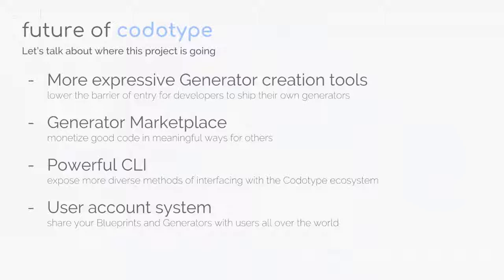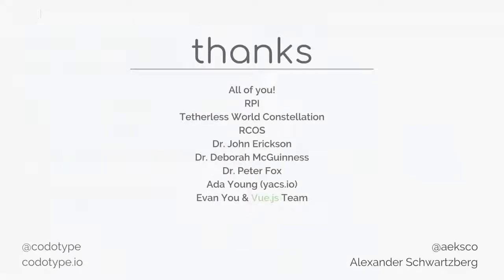For the future of Codotype, I'd like to build more expressive generator creation tools into the platform. Right now you construct generators by hand, but I'd like to get to a point where you can have a generator-generator — you specify the parameters of the generator you want to make and it generates code for your generator. I'd also like to build out a publishing platform where other people can make code generators and share them or even monetize them — similar to the WordPress premium theme market. I'm also working on a command-line interface to use the full scope of Codotype features from the command line.